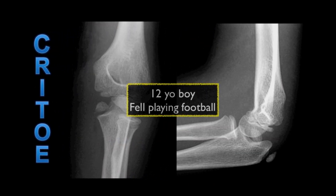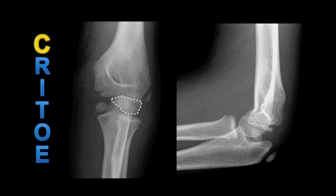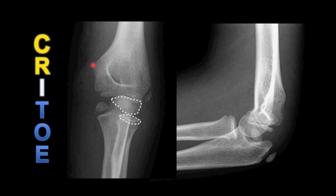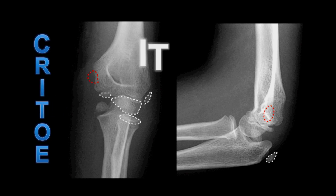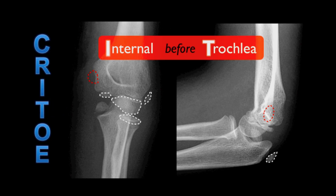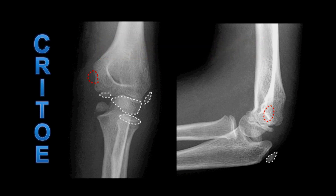Here is a 12-year-old boy who has fallen whilst playing football. We can see that he has a capitellum and a radial head in its normal position, but the internal epicondyle cannot be seen in its expected location, despite the fact that the trochlea, the olecranon, and the external epicondyle are all present. The extra bone fragment here on the AP image and here on the lateral image represents the internal epicondyle, which has become avulsed and sits inferiorly within the joint. The internal epicondyle is the most common of the ossification centres to become fractured and avulsed. If you had to remember just one thing from this tutorial, this is it: internal before trochlea. If on an elbow radiograph in a child you can see a trochlear ossification centre, you should always be able to see an internal epicondyle ossification centre, and if you can't, you need to look very hard to find the avulsed bone.